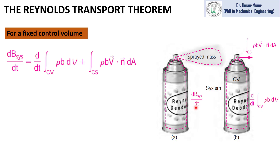In the Reynolds Transport Theorem, the first term is the change in the system property with respect to time. The second term is the change of property b within the control volume with respect to time. The third term is the mass flux crossing the boundaries of the control volume. This equation is for a fixed control volume.